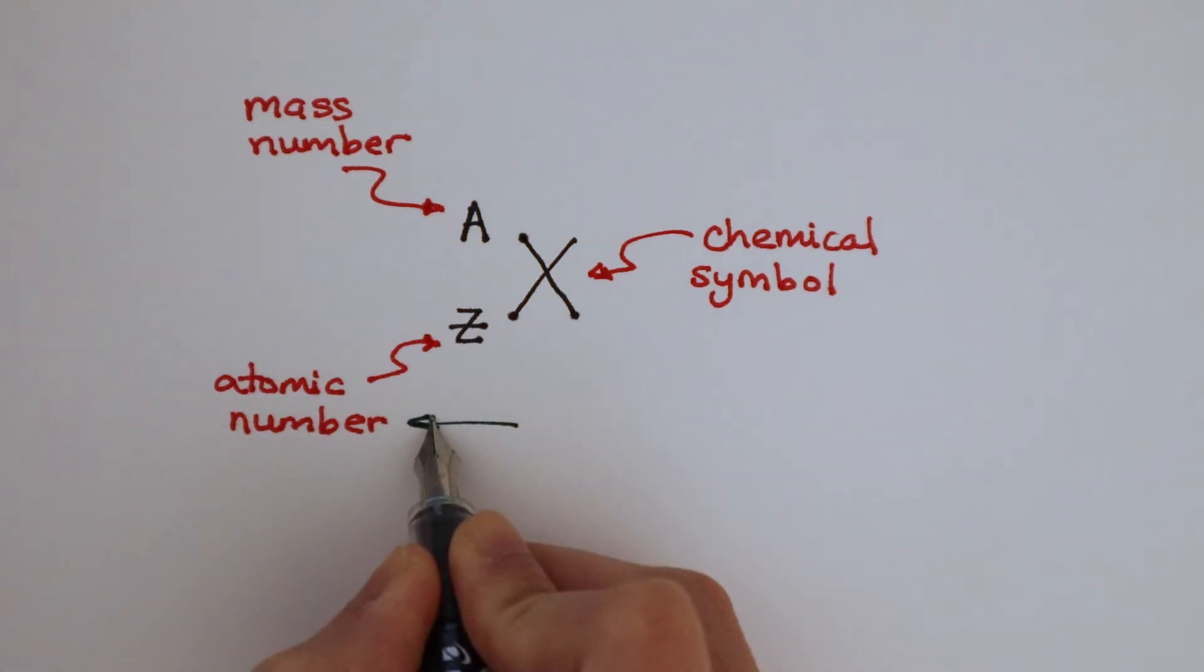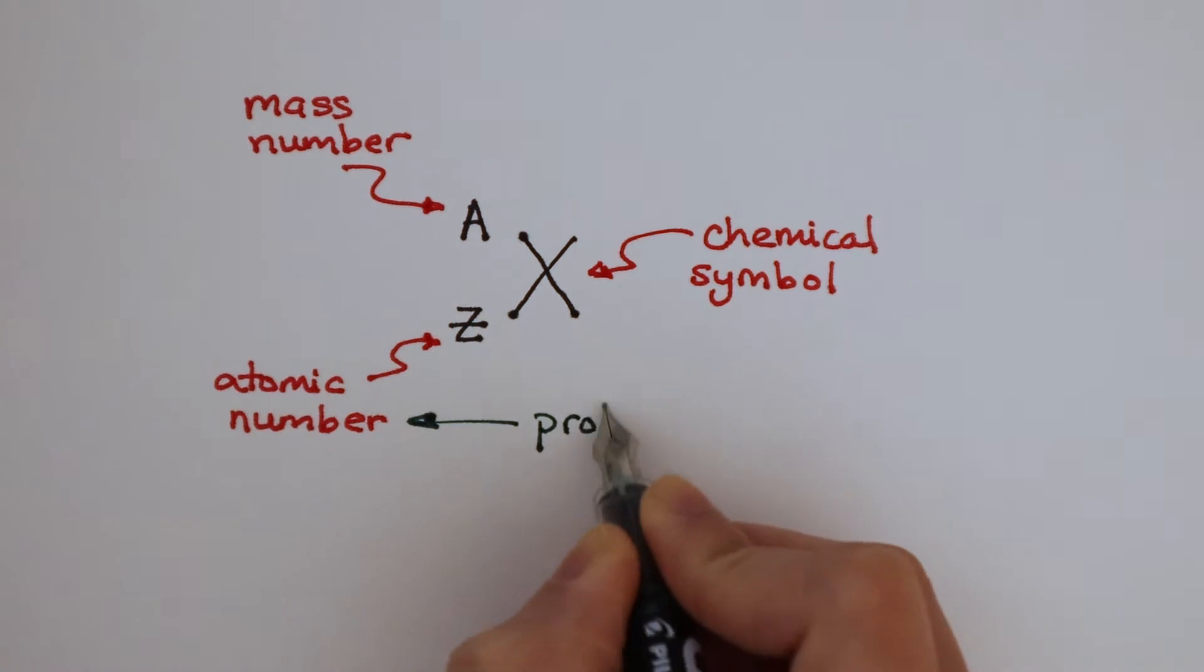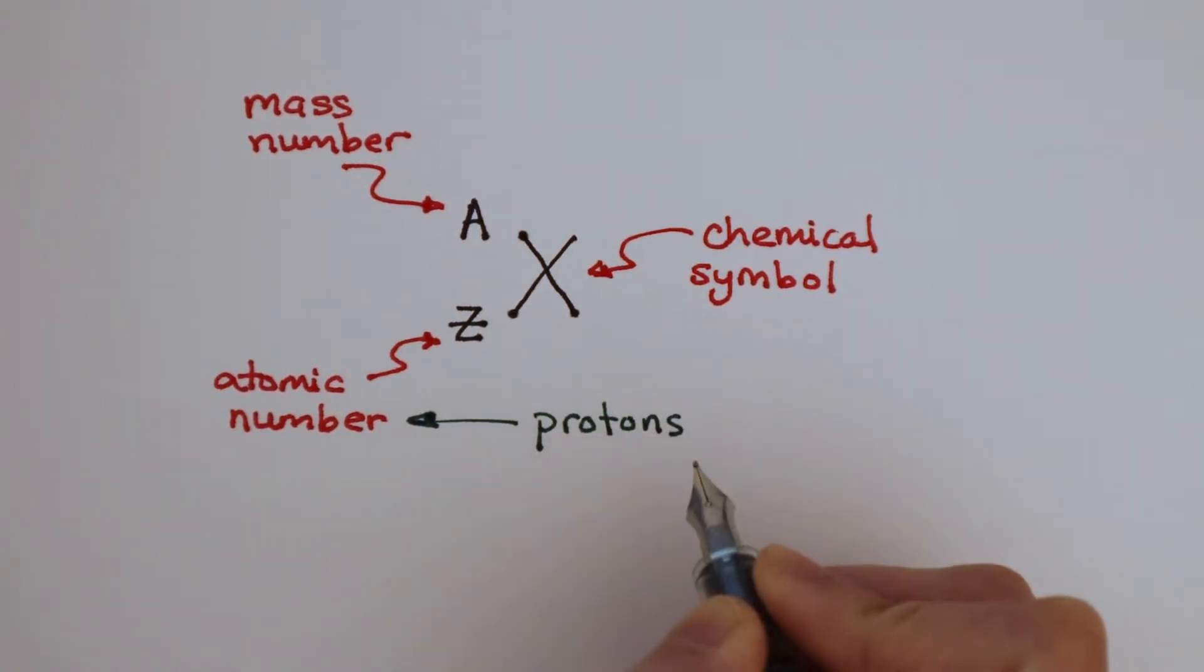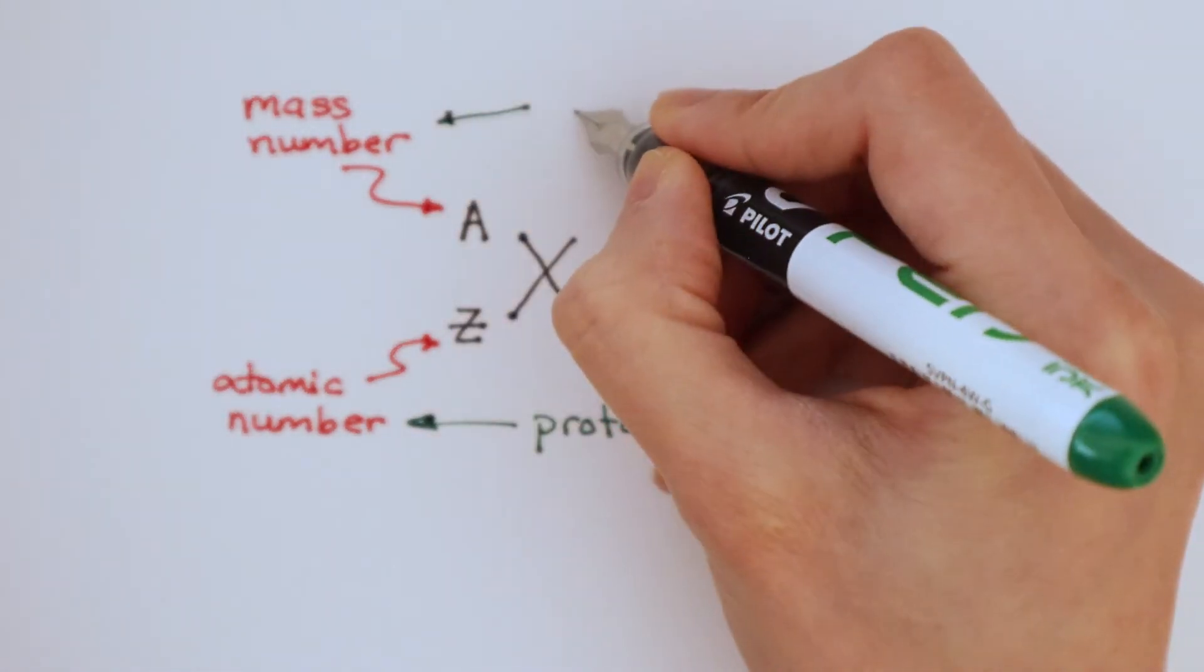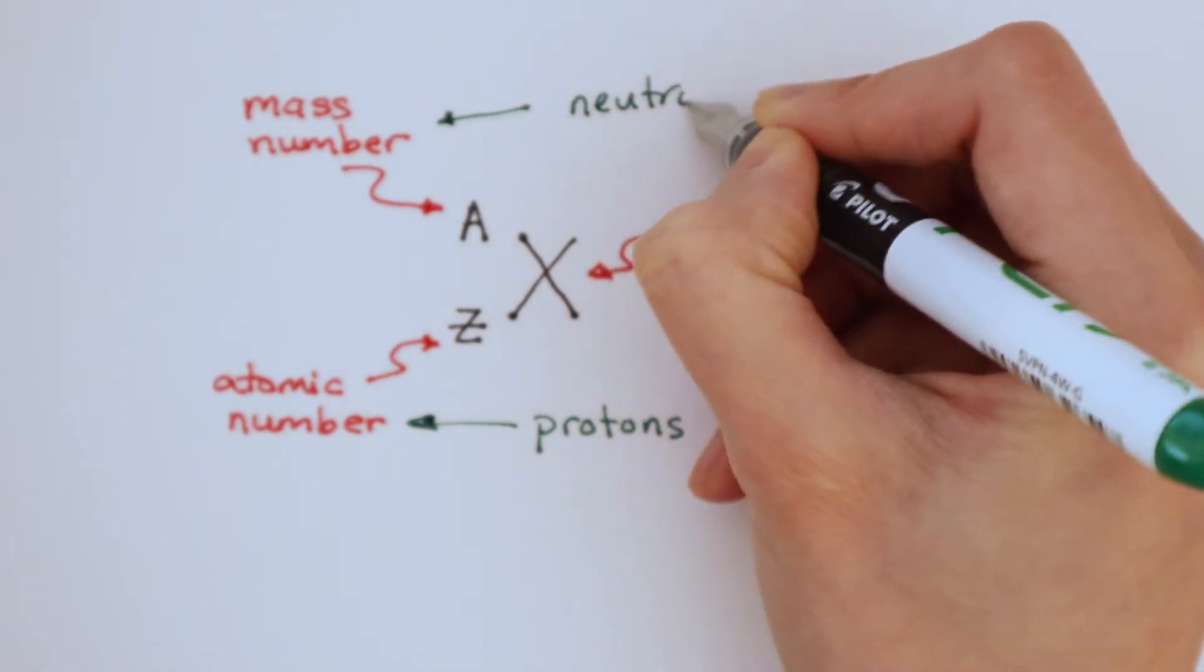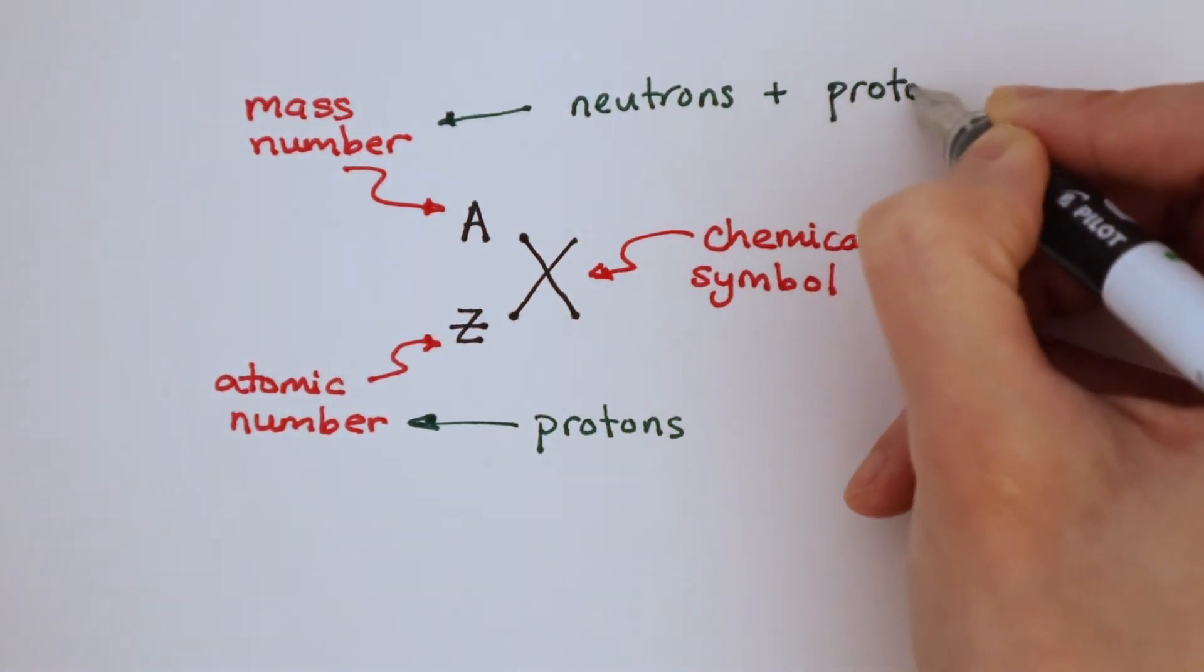The atomic number tells us how many protons there are in an atom of this element. The mass number tells us how many neutrons and protons there are in an atom of this element.